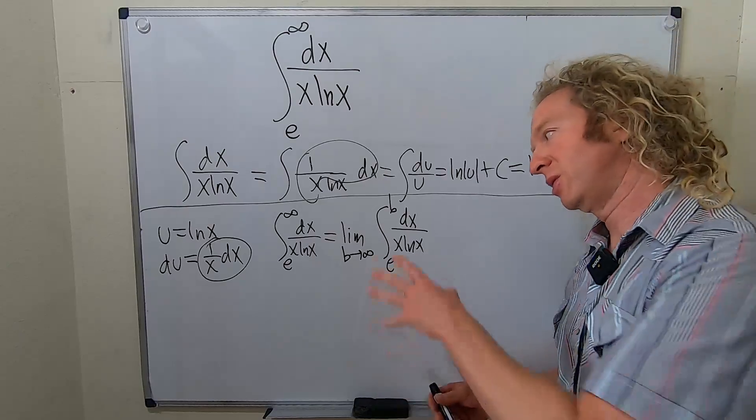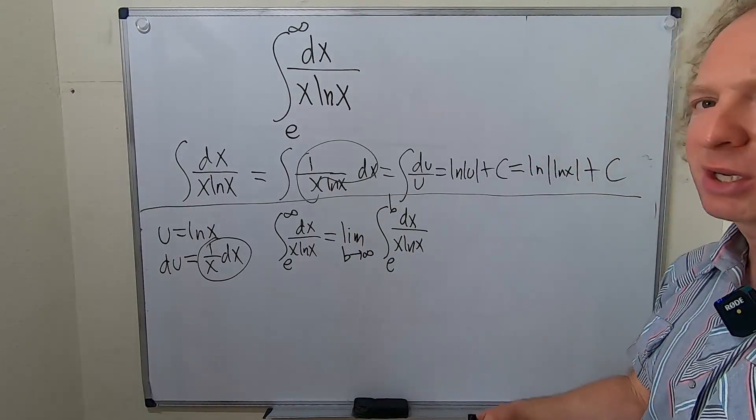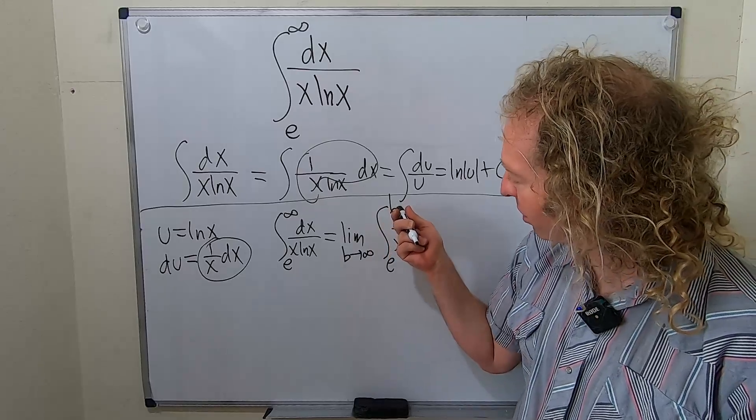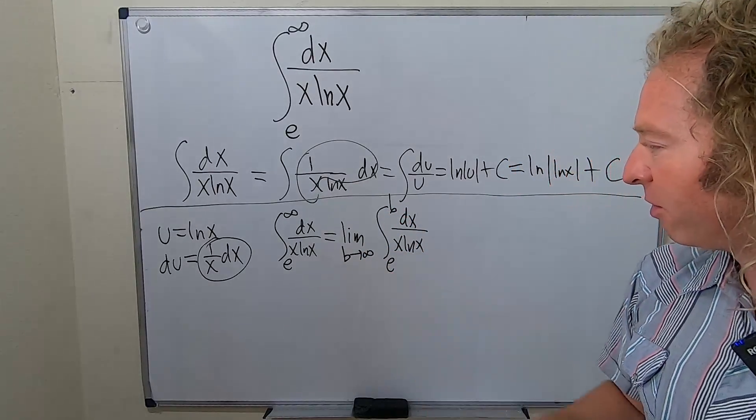You just got to be careful. So we can replace the infinity with the b that b approach infinity. We worked this out already, right?